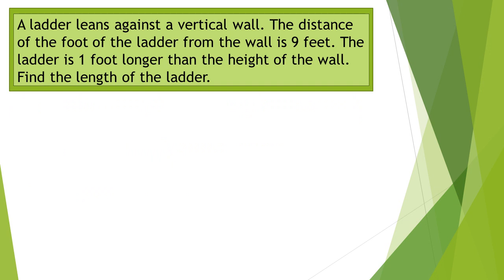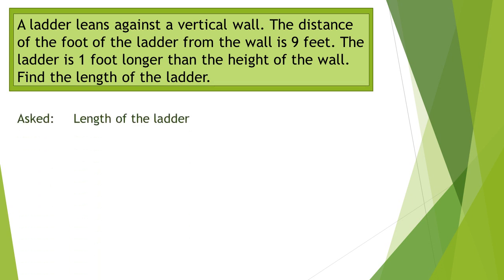A ladder leans against a vertical wall. The distance of the foot of the ladder from the wall is 9 feet. The ladder is 1 foot longer than the height of the wall. Find the length of the ladder. What is asked is the length of the ladder.